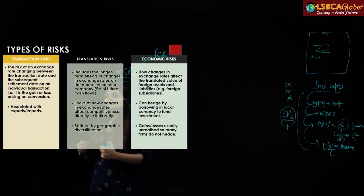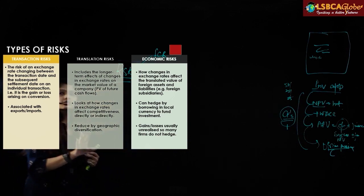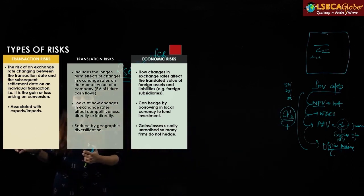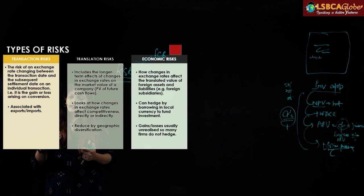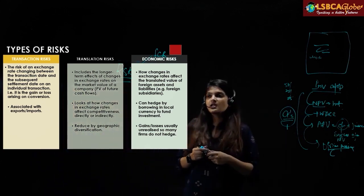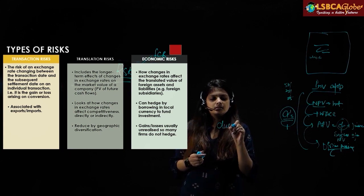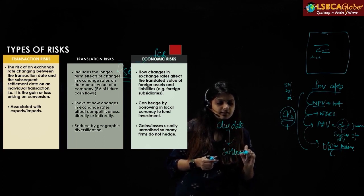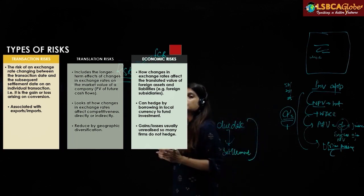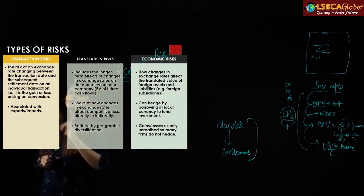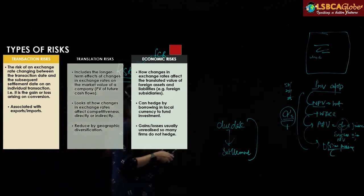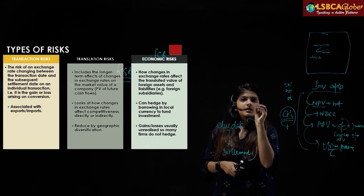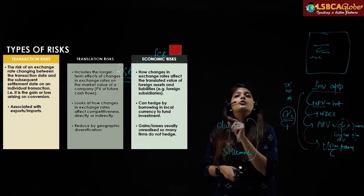The types of risk are transaction risk, translation risk, and economic risk. Transaction risk relates to a single transaction — the risk that exchange rates may change from the due date to the settlement date. The risk of change in exchange rates from due date to settlement date is regarded as transaction risk, and it is usually related to a single transaction, such as a particular export or import.